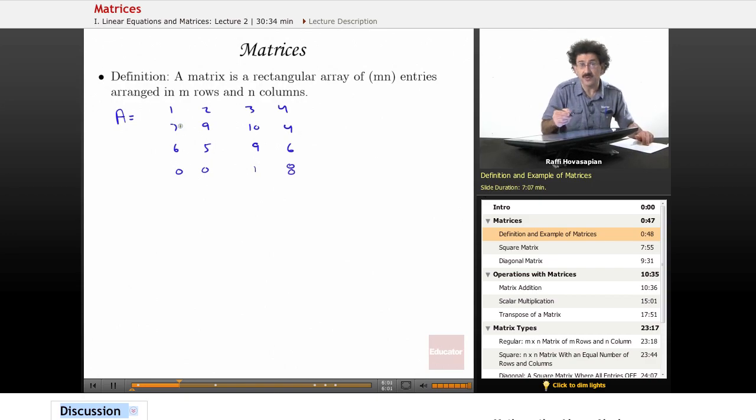So we might talk about the third row. That's going to be [6, 5, 9, 6]. We might talk about the second column. The second column is going to be [2, 9, 5, 0].